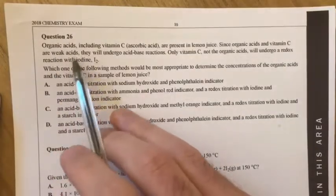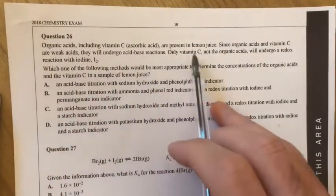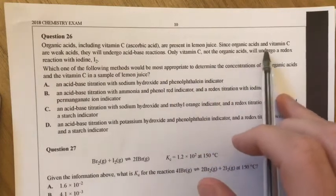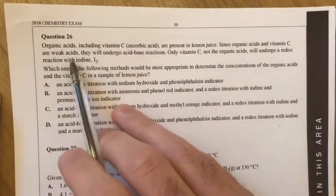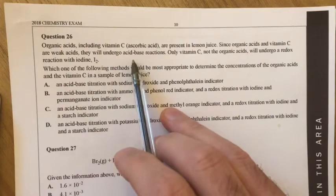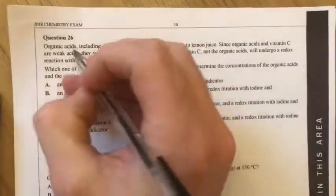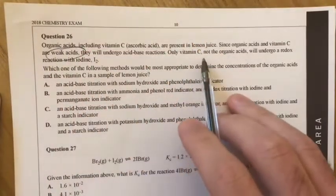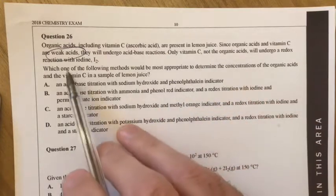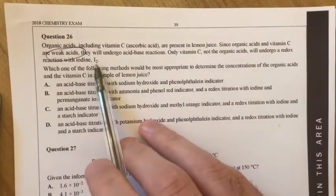Question 26. Organic acids including vitamin C are present in lemon juice. Since organic acids and vitamin C are weak acids, they will undergo acid-base reactions. So they are weak acids, that's something you need to know. Only vitamin C, not organic acids, will undergo a redox titration with iodine.